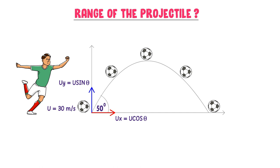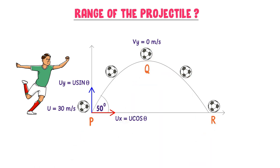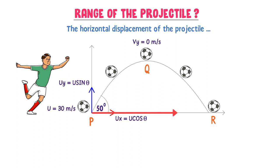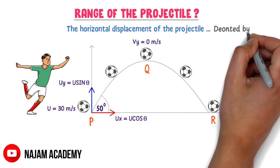We know that the vertical component of the velocity becomes zero at maximum height, but the motion of the ball is not zero because it still moves in the horizontal direction. If you do not know all these concepts, watch our lecture of projectile motion — its link is given in the description. Here, let me divide the motion of the projectile into P, Q, and R. The horizontal displacement of the projectile is called the range of the projectile. For example, the displacement of the ball from P to R is called the range of the projectile, denoted by capital R.